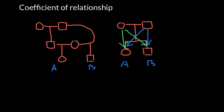Individual A got 0.5, or 50%, of its genetic makeup from the mother's side. Individual B also got 0.5, or 50%, of its genetic makeup from the mother's side. If we multiply these two numbers, we can say that individual A and B share about 25% of the genetic makeup inherited from the mother's side. Individual A also got 0.5 or 50% from the father's side, and individual B also got 0.5 or 50% from the father's side.